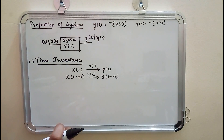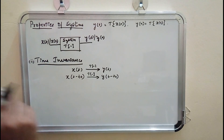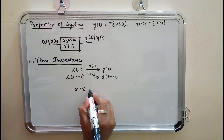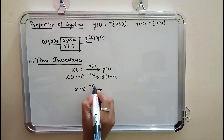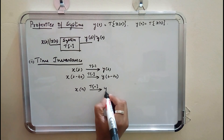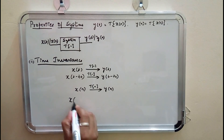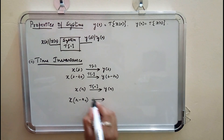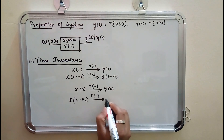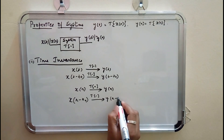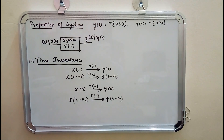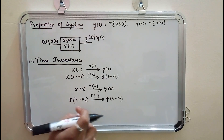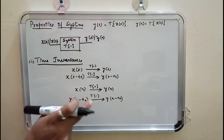This holds for continuous time signals. Similarly, for discrete time signals: if X[N] is given as input, transformation gives Y[N]. If there is a shift in the input, X[N − N0], then there should be a corresponding shift in the output as well. If this condition is satisfied, the discrete time system is said to be time invariant.